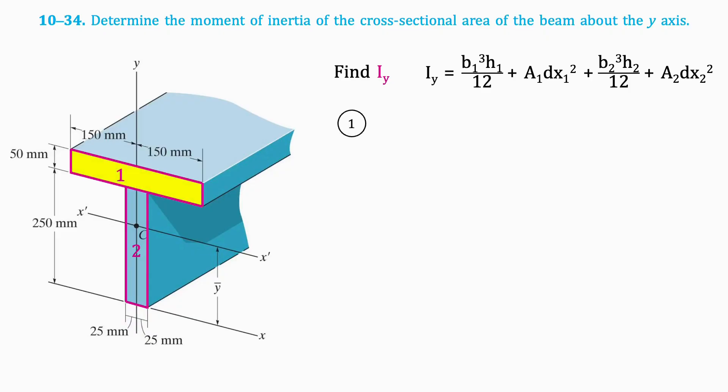The area of the first section is as follows, and the distance from the centroid to the y-axis is 0, since this section is perfectly symmetrical around the y-axis.